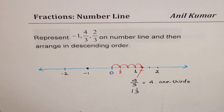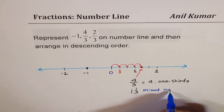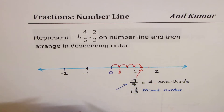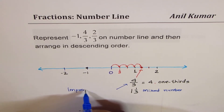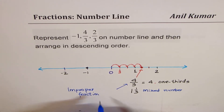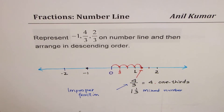If I write it in mixed number form, it could be written as 1 and 1/3. We call 4/3 an improper fraction since the numerator is higher than the denominator.